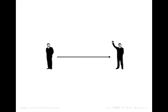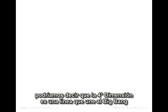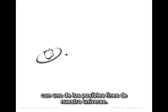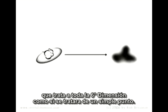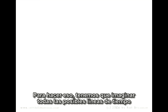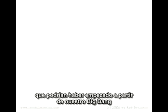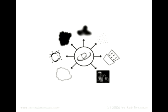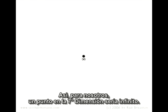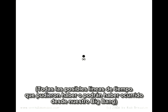In our description of the fourth dimension, we imagine taking the dimension below and conceiving of it as a single point. The fourth dimension is a line which can join the universe as it was one minute ago to the universe as it is right now, or in the biggest picture possible, a line which joins the Big Bang to one of the possible endings of our universe. Now as we enter the seventh dimension, we're about to imagine a line which treats the entire sixth dimension as if it were a single point. To do that, we have to imagine all the possible timelines which could have started from our Big Bang, joined to all the possible endings for our universe — a concept we often refer to as infinity — and treat them all as a single point. A point in the seventh dimension would be infinity: all possible timelines which could have or will have occurred from our Big Bang.